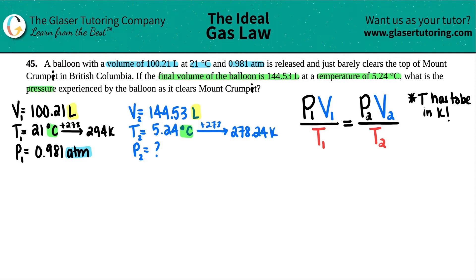The corresponding liters, the volume is the same unit, so we're good with that. And if you noticed, if this pressure is in ATM, what is this pressure going to be in when we get it? Yeah, it's going to be ATM. So let's just plug it in. So I got P1, which is 0.981, times V1, which is 100.21, all divided by T1, which is 294.